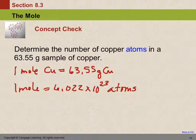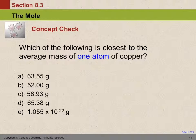You can set up a conversion from grams to moles to atoms, but that's not what they're getting at here. If you have a mass equal to the molar mass, that's Avogadro's number of atoms. The answer is Avogadro's number.